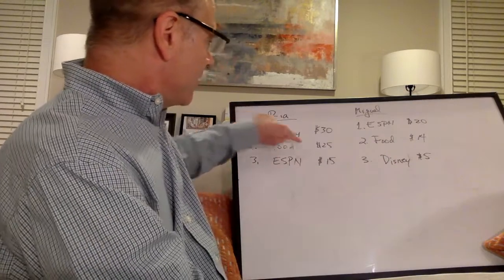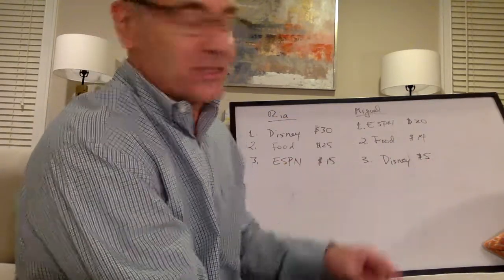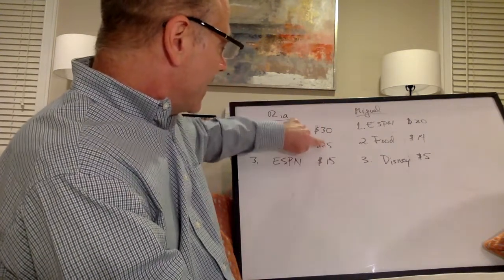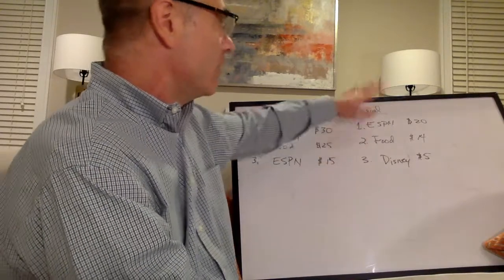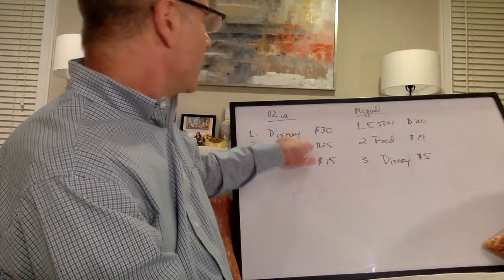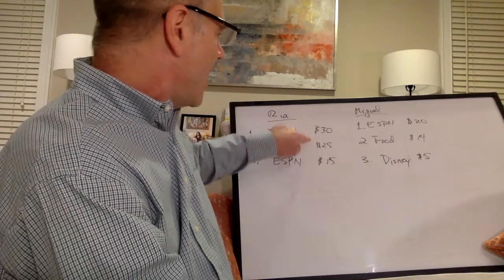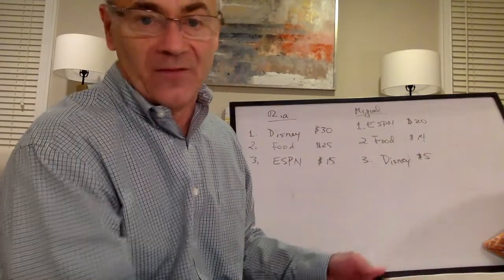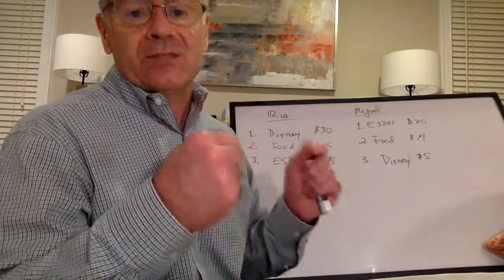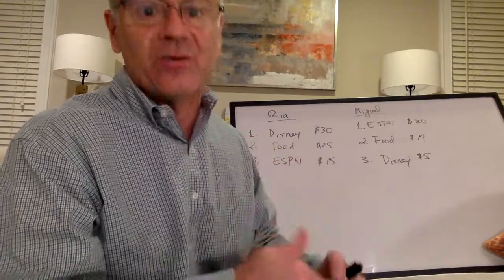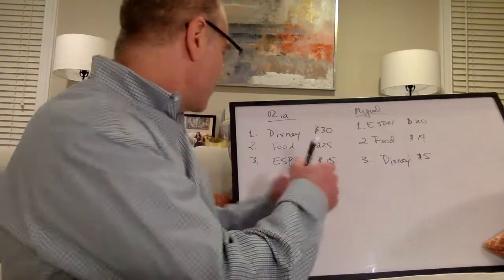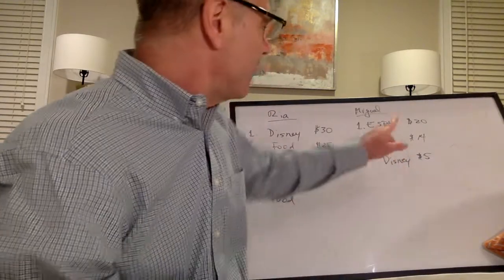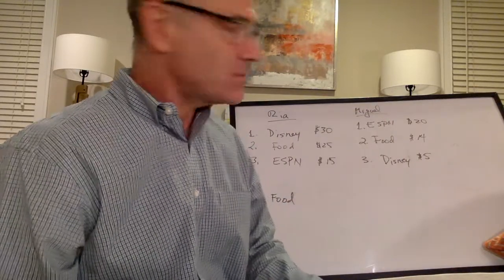If they start at Food Network, there's no beneficial switch available. Miguel would need to pay at most $6 to move to ESPN, but Ria requires at least $10 — no deal. Ria would need to pay at most $5 to move to Disney, but Miguel requires at least $9 — no deal. So the only stable outcome they'll stick to without further negotiating is the Food Network. Under Rule 1, they watch the Food Network.